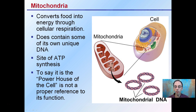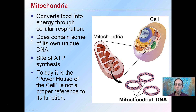The mitochondria is the site where food is converted into energy through the process of cellular respiration. It does contain some of its own unique DNA, and it's specifically the site of ATP synthesis. Adenosine triphosphate is the energy currency of the cell. Saying it's the 'powerhouse of the cell' is not really a proper reference — ATP synthesis is a much more accurate description.